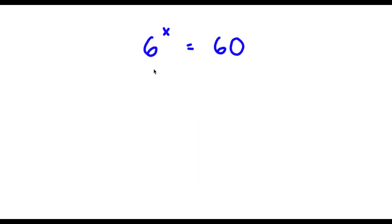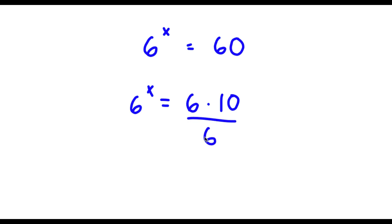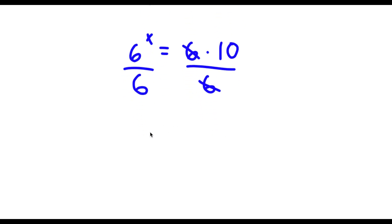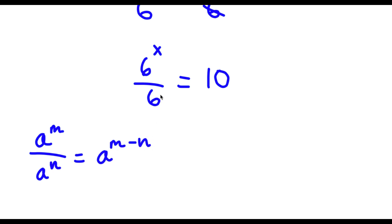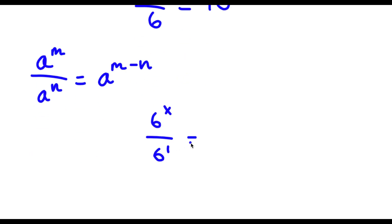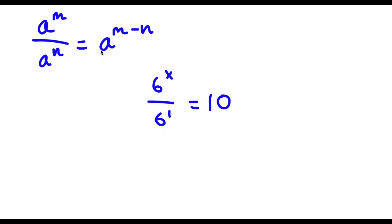So that's my answer for the first problem. Now I have 6 to the power of x is equal to 60. The first thing I'm going to do is rewrite 60 as 6 times 10, so now I have 6 to the power of x is equal to 6 times 10. I'll divide both sides by 6, so I'm left with 6 to the power of x over 6 is equal to 10. Since 6 is the same as 6 to the power of 1, dividing gives 6 to the power of x minus 1 is equal to 10.